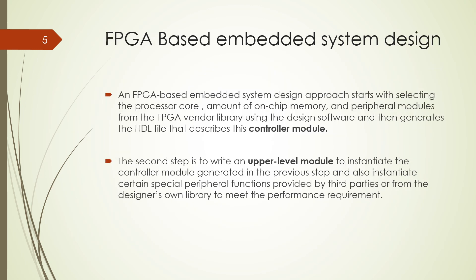In FPGA-based embedded system design, we have two modules: the controller module and the upper-level module. The controller module involves selecting the core processor, the amount of on-chip memory required, and peripheral modules from the FPGA vendor library, from which we generate the SDL file — which is the controller description. The second step is to instantiate and generate the upper-level module.